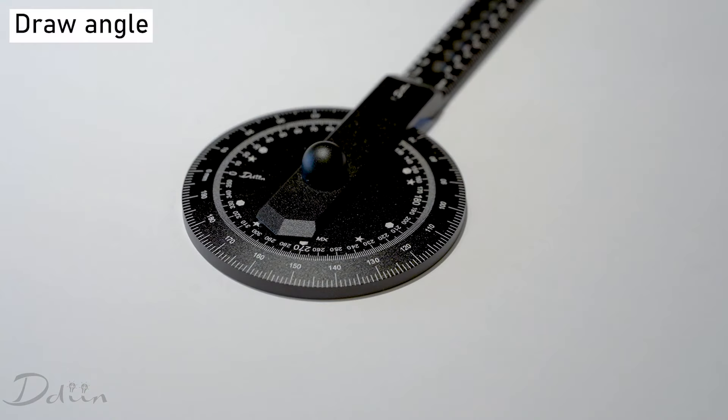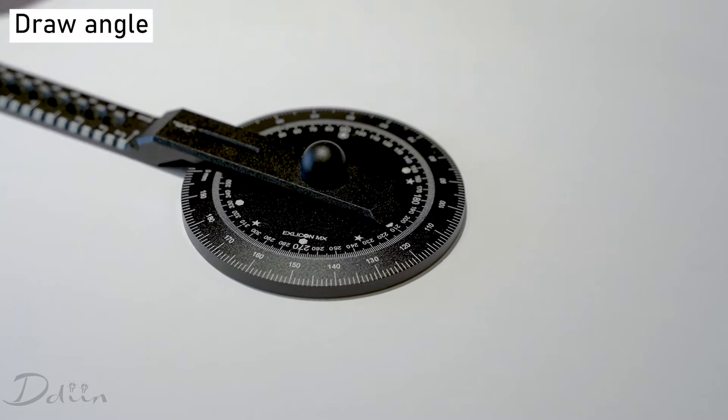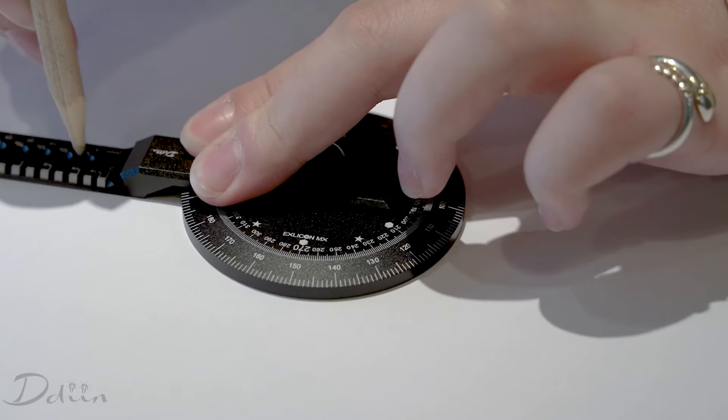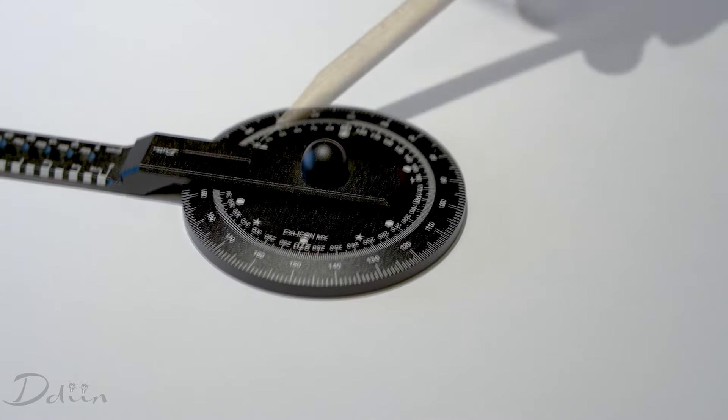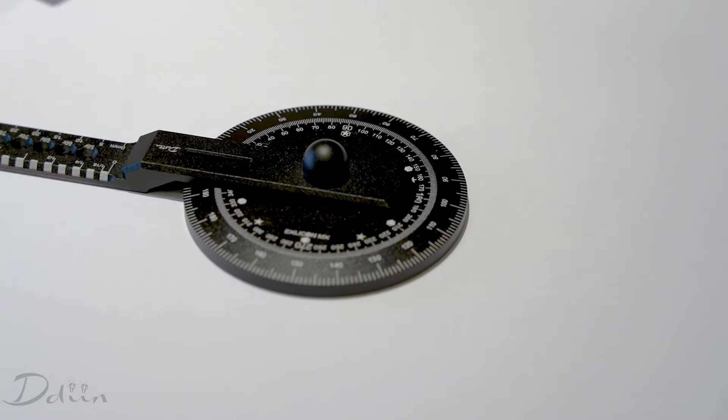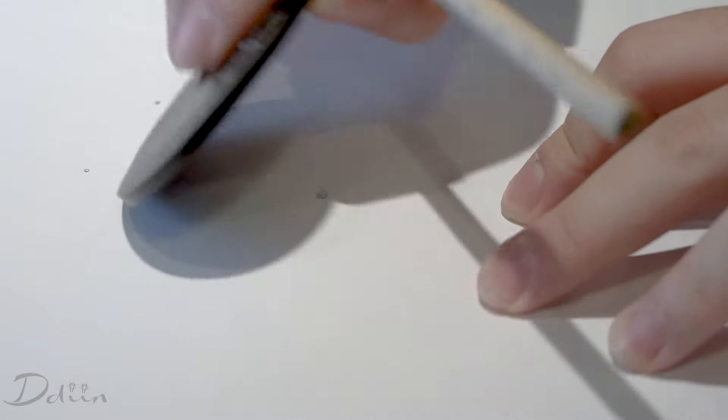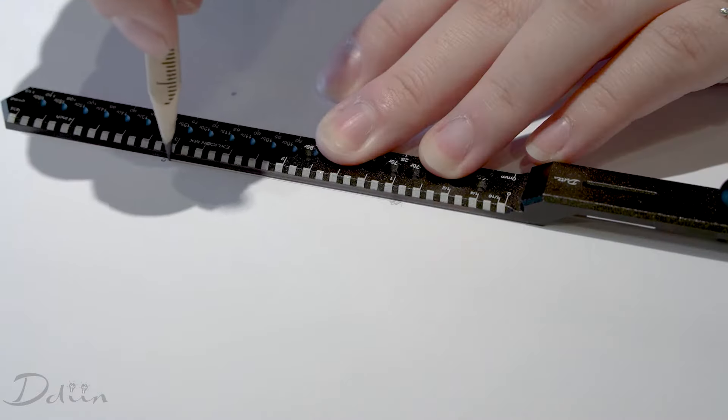To draw angles, mark a dot on the center and align the hole on the wing to zero. Draw another dot. Rotate the wing to the desired angle and draw another dot. Remove the wing and the base and connect the dots to form the angle.